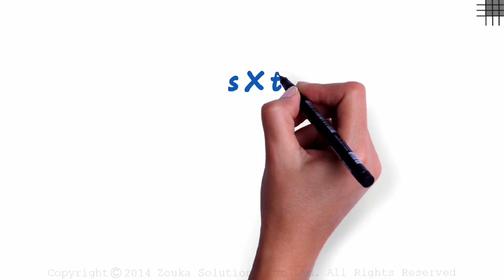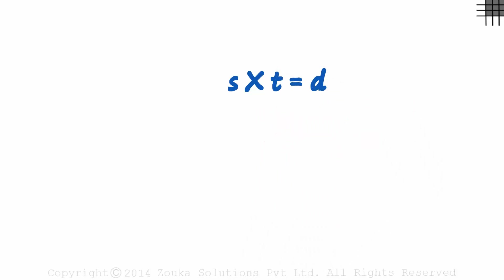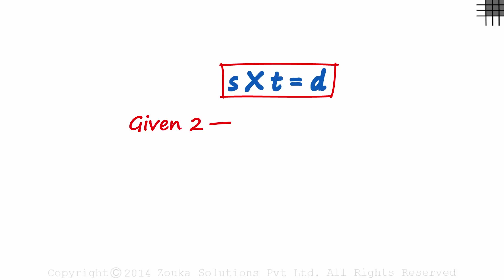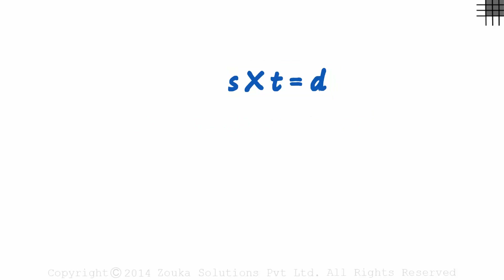Speed multiplied by time is equal to distance. This tells us that if we know any two parameters, we can easily find the third. But that's not all — it tells us a lot more. If one of the parameters is constant, then the other two are related to each other in a special way.